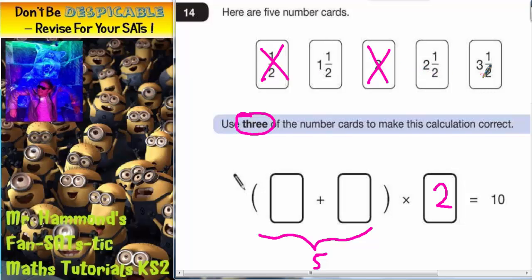Two and a half and three and a half, well the whole number two and the whole number three straight away is going to make five and your two extra halves would make an extra one to make six. So it can't be those two together.